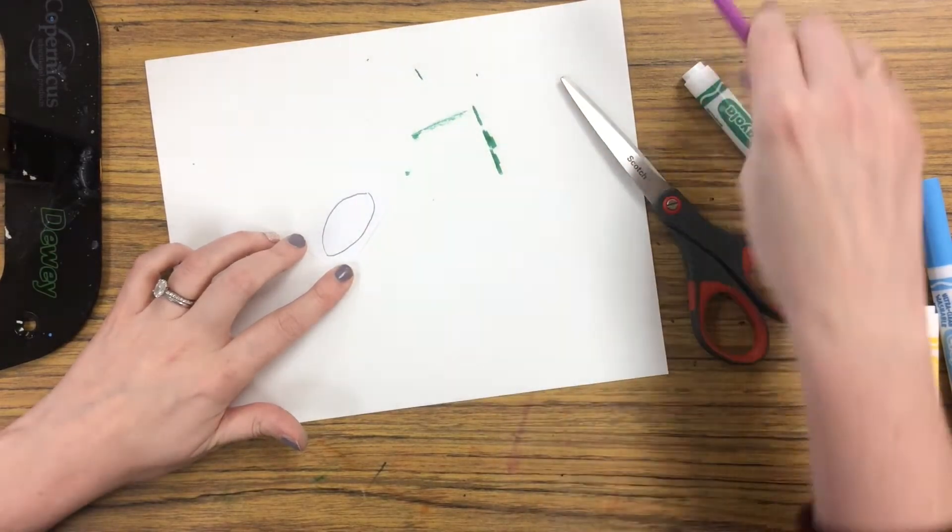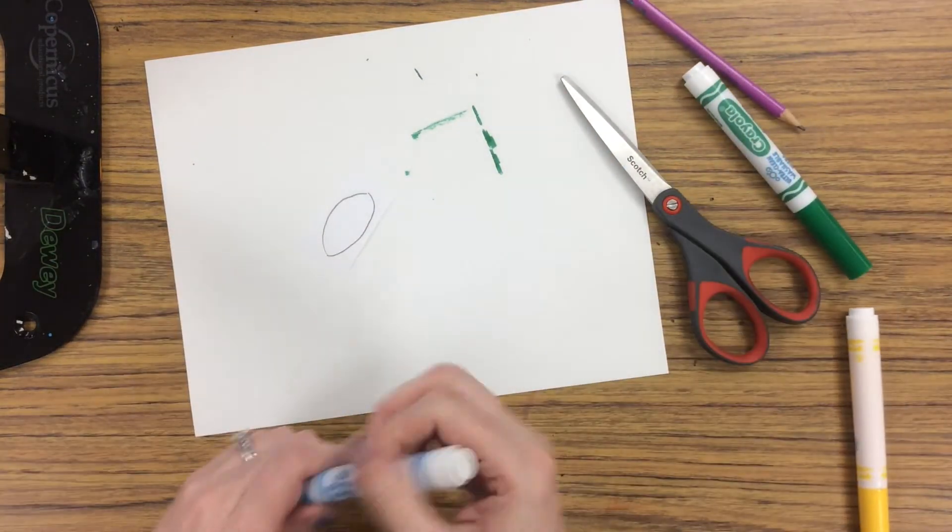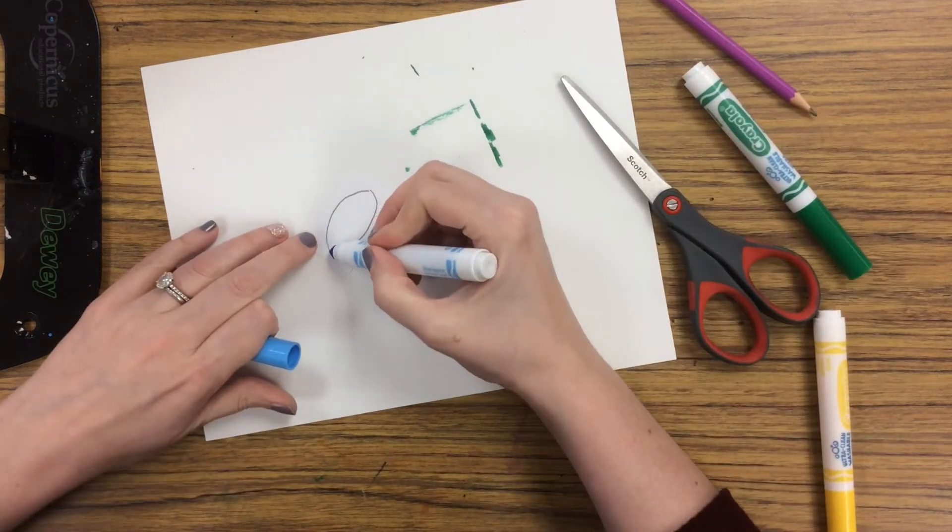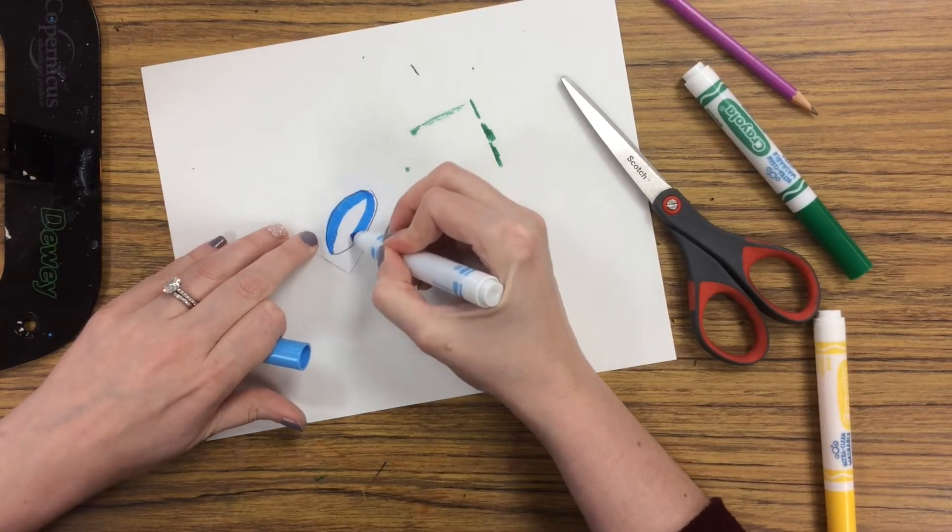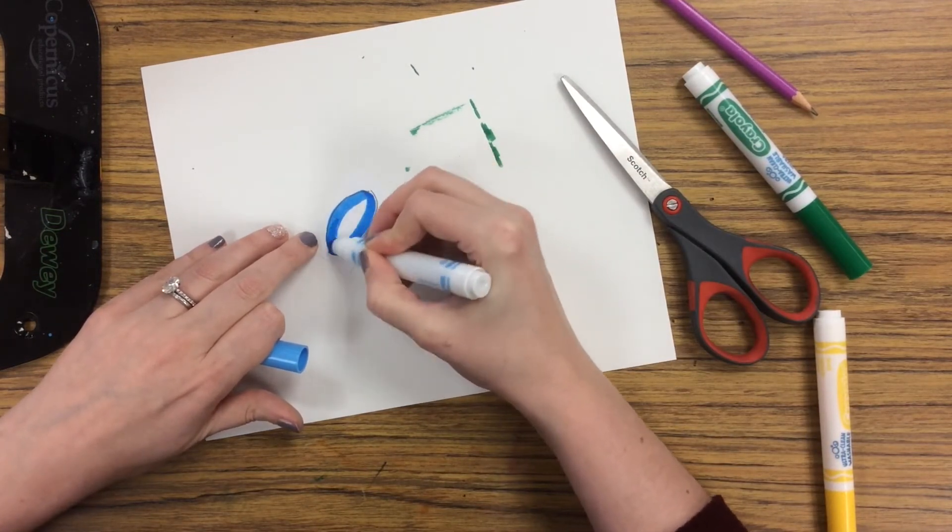You're gonna make sort of like a football shape or the shape of an eye. Like that. And again, decide what color you'd want to do. So my bird was blue, so I'm gonna color it in with blue.